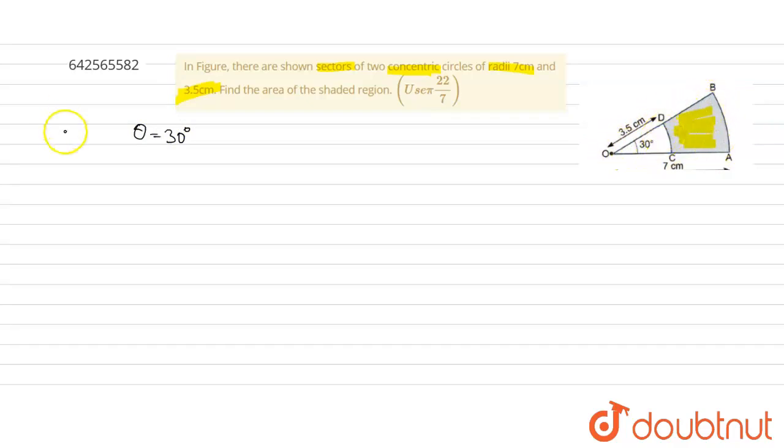Area shaded equals area of outer sector minus area of inner sector, which is equals to outer sector area will be theta by 360 degrees into pi into r.